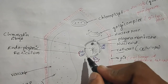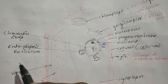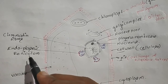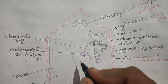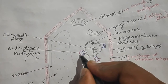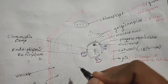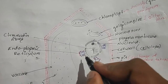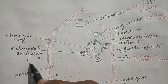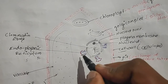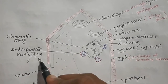From the nuclear membrane, a tube-like structure arises known as the endoplasmic reticulum. The endoplasmic reticulum is of two types: smooth endoplasmic reticulum and rough endoplasmic reticulum. Dot-like structures called ribosomes are present on the endoplasmic reticulum. Where ribosomes are absent, it is smooth endoplasmic reticulum; where ribosomes are present, it is rough endoplasmic reticulum.